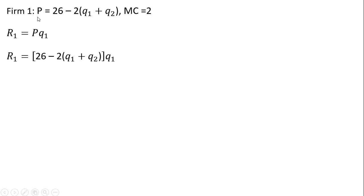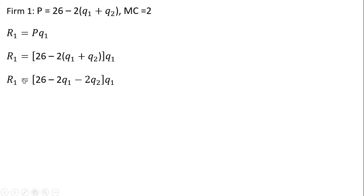We're going to start with firm 1. We have the inverse market demand and firm 1's marginal cost. We're going to calculate firm 1's total revenue first. Revenue is price times quantity, so for price I'm going to plug in the inverse market demand — that's what you see here in brackets — and then simplify: minus 2 times Q₁, minus 2 times Q₂, giving us this result.